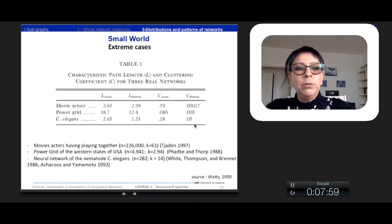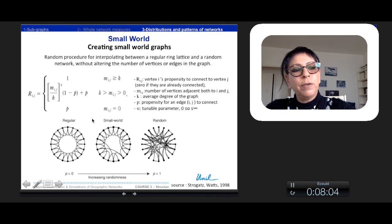And you see here that the clustering coefficient observed is largely superior to the random one. So what they do is that they try to see the properties of all the networks that are in between regular and random, interpolating between both with the same number of vertices or edges in the graph. And so they calculated this random graph by a random procedure, with a propensity to connect a new vertex G and a number of vertices adjacent to I and G. So what is the propensity to connect to I? And so the average degree of the graph, the propensity of an edge to connect, and a parameter that makes like a standardization as alpha.